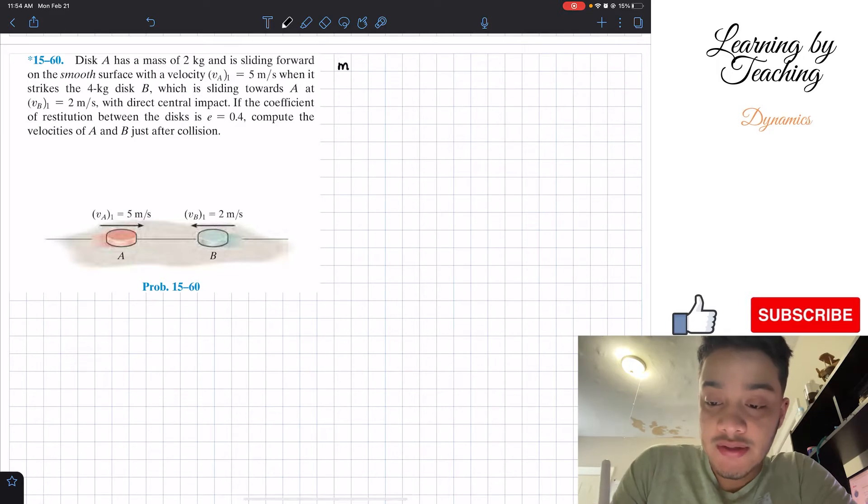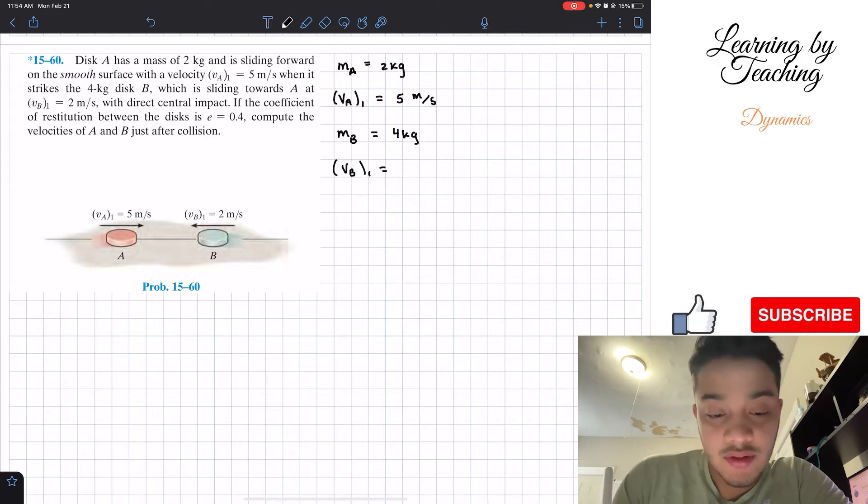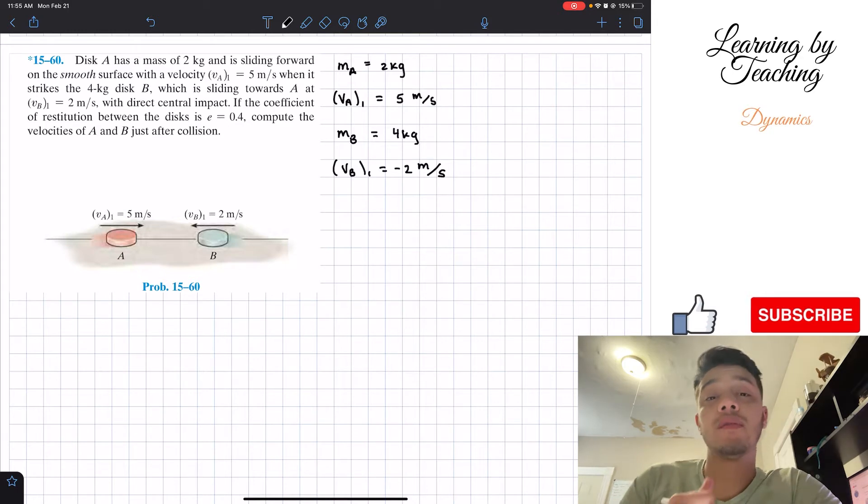The first thing that they're giving me is that the mass of A is equal to 2 kilograms and the velocity VA1 is going to be equal to 5 meters per second. Mass B of my disk B is equal to 4 kilograms and its initial velocity is equal to 2 meters per second. However, as we can see in the figure, it's going to the left. Therefore, I'm going to put a negative since I'm going to assume for all my problems that going to the right is positive. And the last piece they give me is that the coefficient of restitution is going to be equal to 0.4.